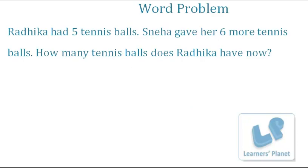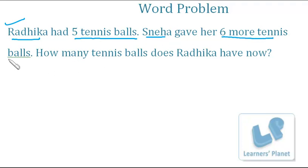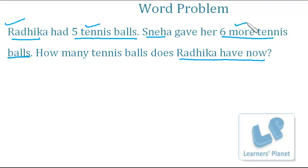Now children, this is our first word problem. Radhika had five tennis balls. Sneha gave her six more tennis balls. How many tennis balls does Radhika have now? This means that first Radhika had only five tennis balls, then Sneha gave her six more. Now we have to see how many balls does Radhika have in all, so we will have to add both of them.